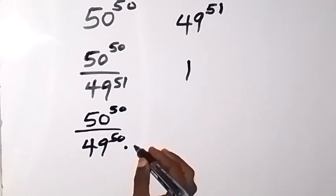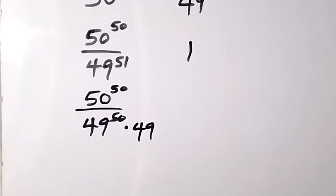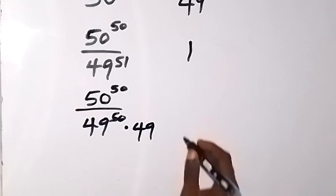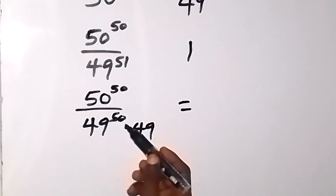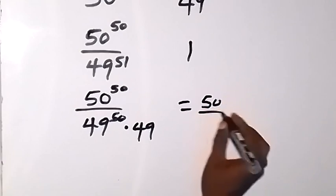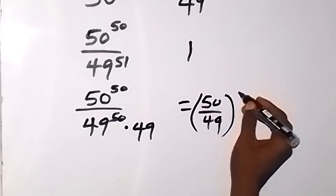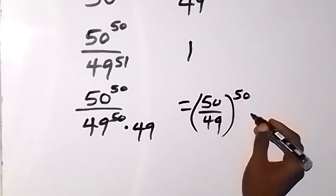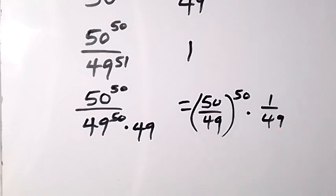Then multiply by 49. So we subtract 49 out from there. Which we can also write again as — since I have 50 raised to the power of 50 on both sides, I can bring it out and see this is 50 over 49 raised to the power of 50, then times 1 over 49. So that's what I have there.